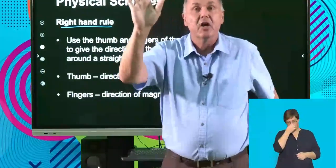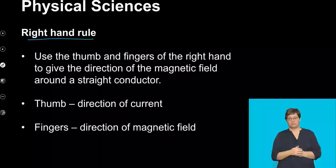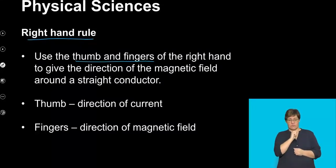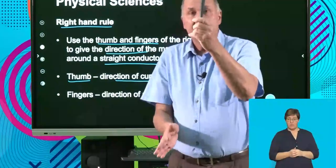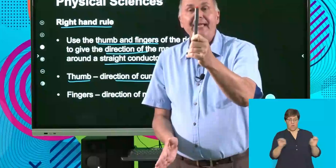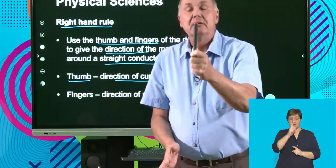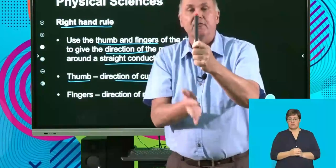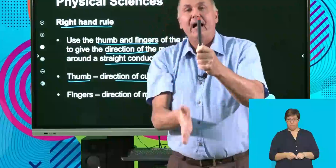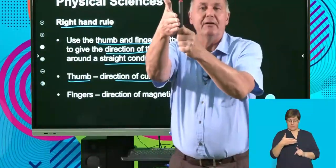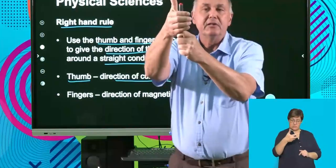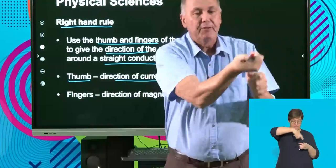I happen to be left-handed, so I know it's the other hand. We're going to use the thumb and fingers of the right hand to give us the direction of the magnetic field around a straight conductor. The thumb is the direction of the current — if this is a conducting wire and the red end is the direction in which the current passes, the direction of the thumb points in the direction of the current, and the curl of the fingers tells us the direction of the magnetic field.